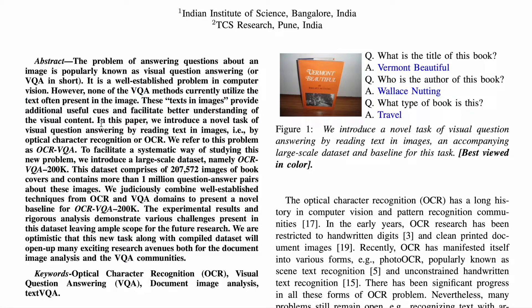Most open-source large-scale datasets for VQA are focused on question answering from images based on objects present in them. This research targets a different gap — if there's text written in an image, can we also do question answering about that text?